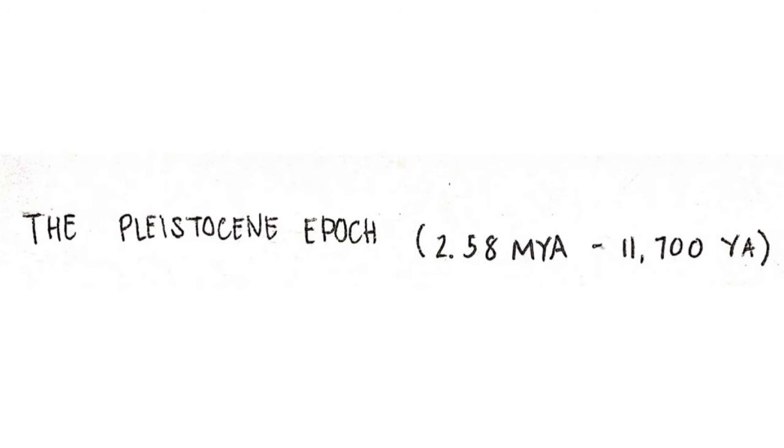Pleistocene epoch spanned from 2.58 million years ago to 11,700 years ago. During this period, continents were moving and drifting into their current positions. This is also the time when the most recent ice age occurred. Winters and summers existed, and the variation in temperature produced glacial advances because cooler summers didn't completely melt the snow.